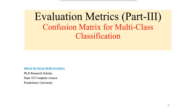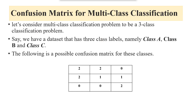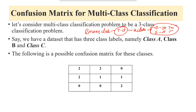Hi friends, today we are going to discuss about the Evaluation Matrix Part 3: Confusion Matrix for Multiclass Classification. In the previous lecture, I already discussed Binary Class Classification. The difference is that Binary Class means only two classes exist in the target variable — 0 or 1, yes or no, true or false. If we have more than two classes, it is called Multiclass.